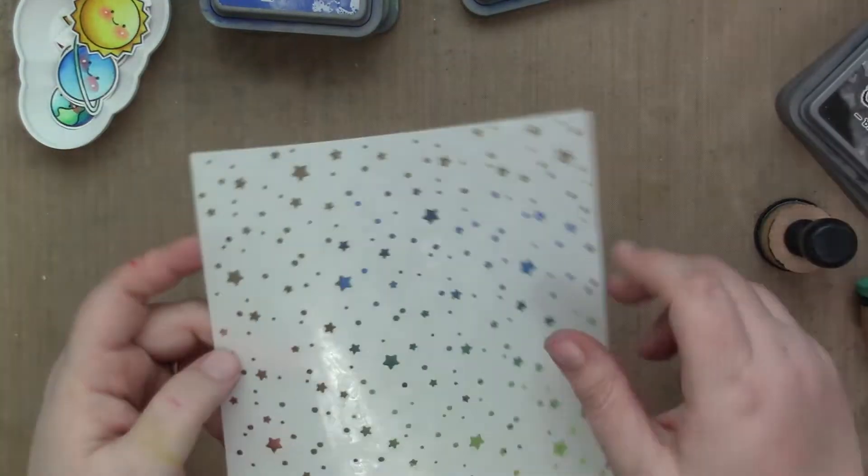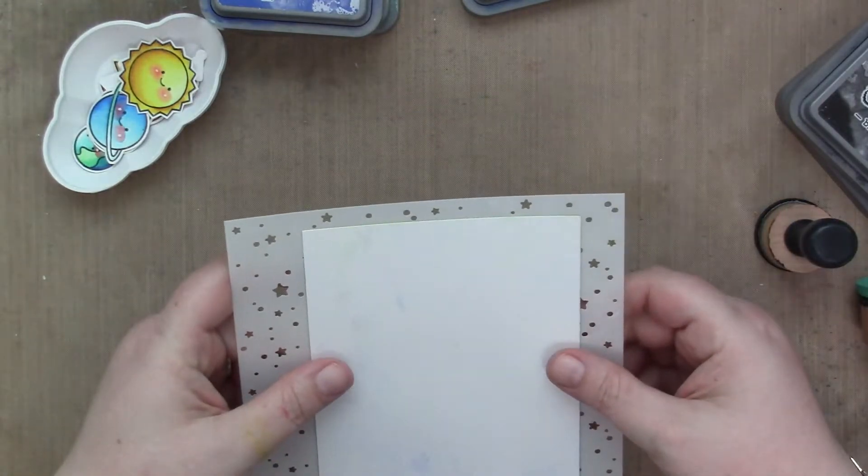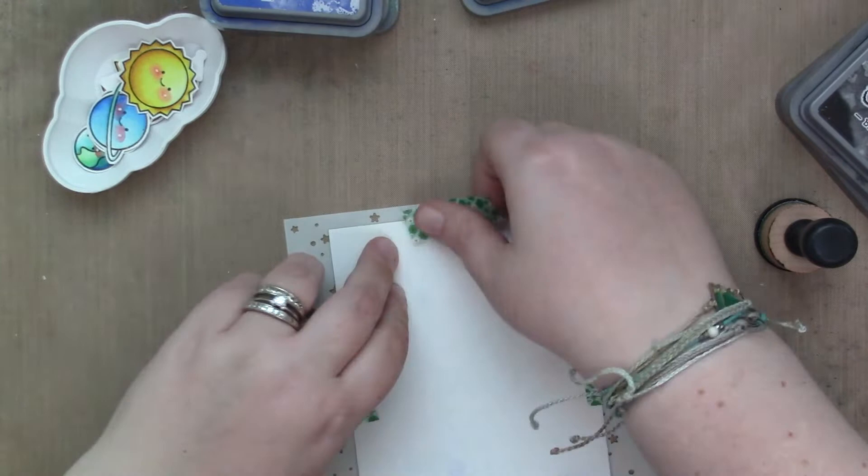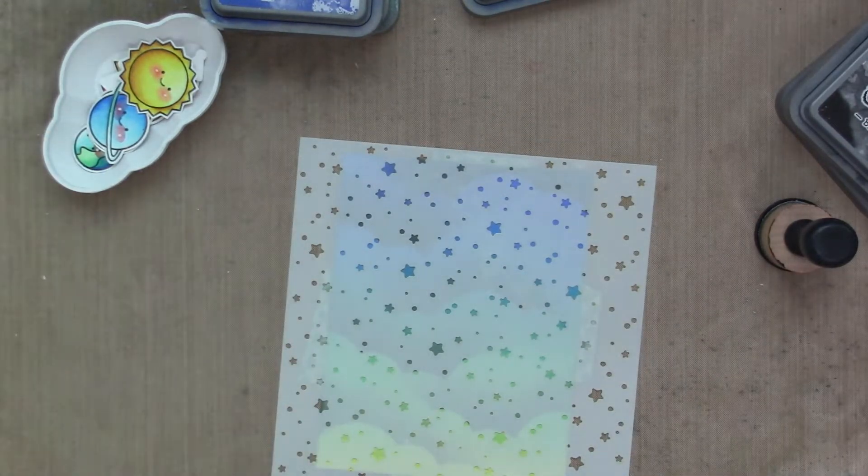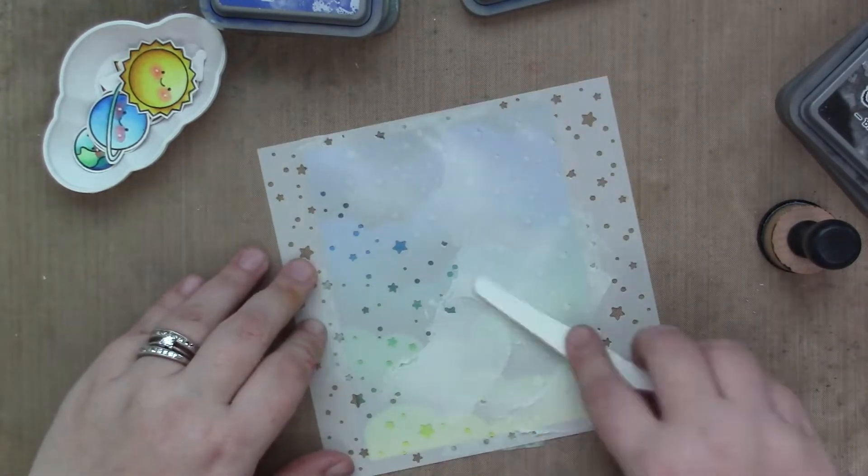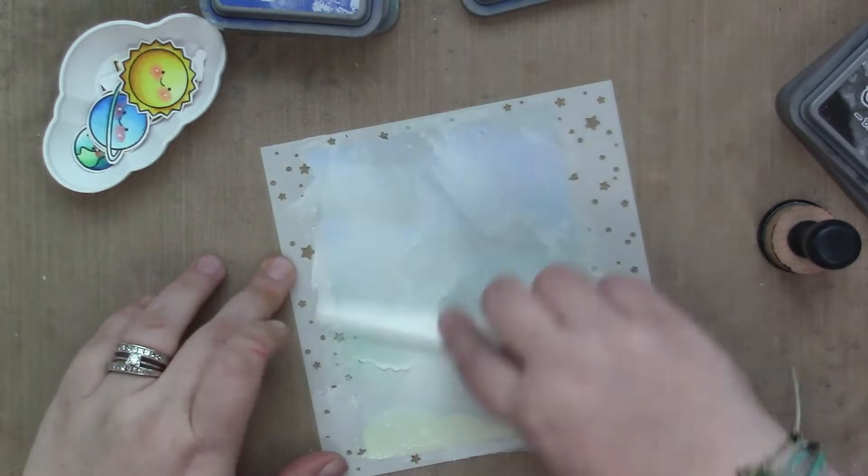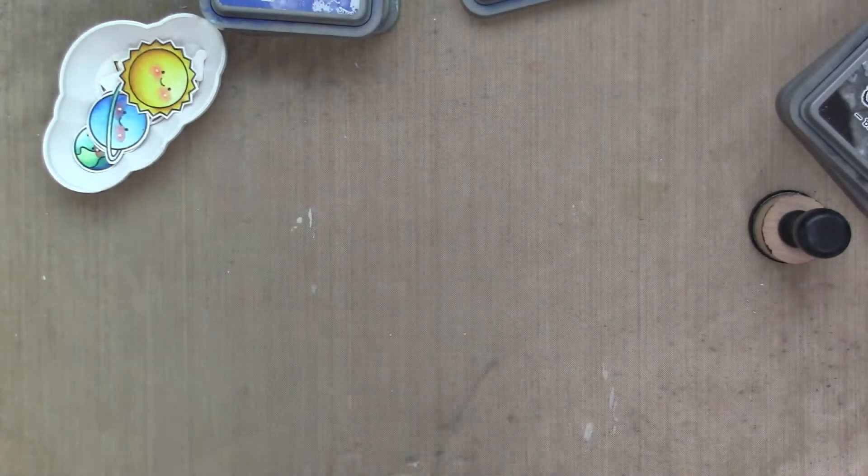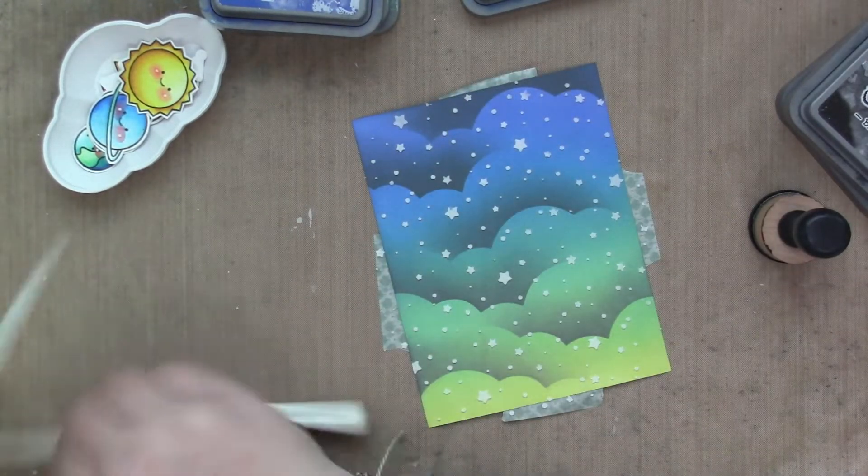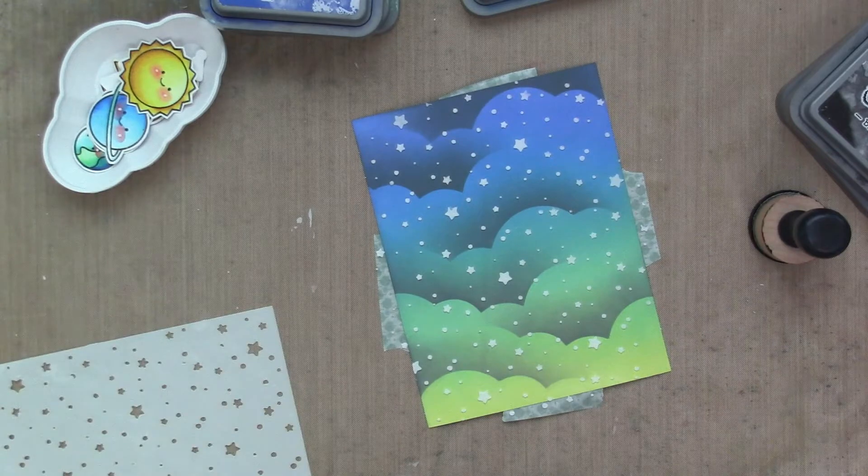And then I'm taking the Starry Sky Stencil and the white embossing paste, the white stencil paste. And I'm just going to add some texture for the stars and then set that aside to dry. And that's the background. And it's so cute. Perfect for these rainbow party planets, right?